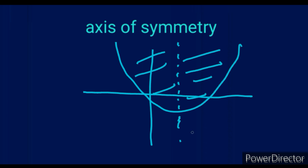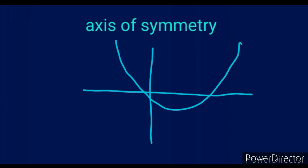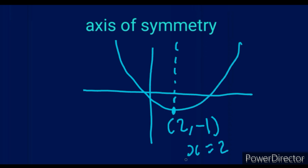If they ask you the axis of symmetry of the parabola, all you have to do is find the x-value of the turning point. If the turning point is (2, -1), you say x equals 2. The axis of symmetry is the vertical line that separates the parabola into two equal parts and cuts at the x-value of the turning point. So all you do is say x equals 2.